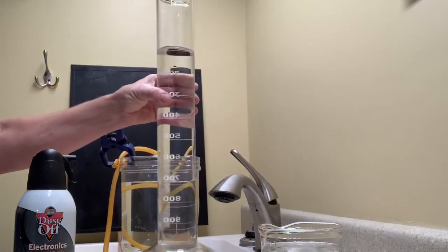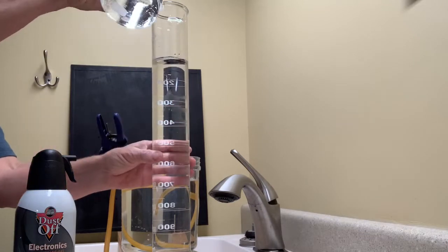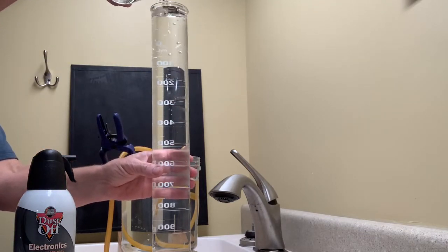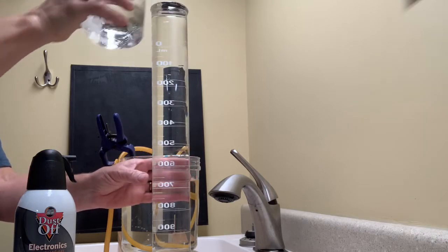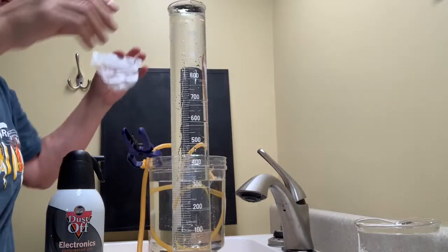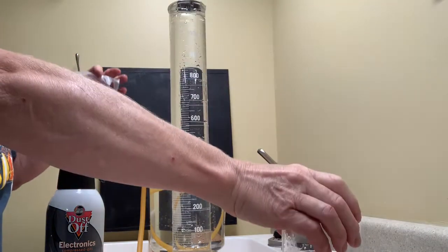This time we'll collect quite a bit more gas so I'm going to use a 1000 mL graduated cylinder. And thus I will be doing the experiment over the sink since the collection jug that the cylinder is turned upside down in will overflow.